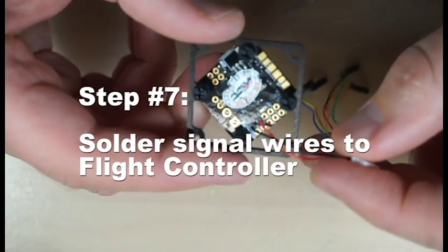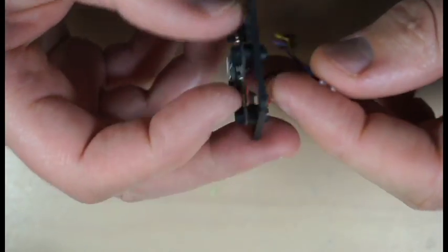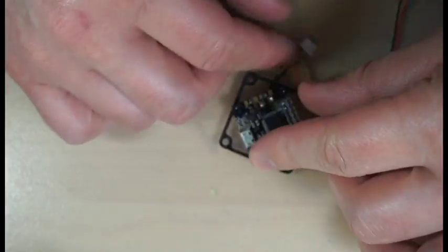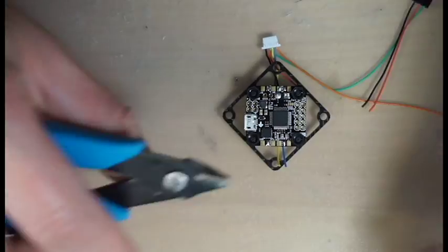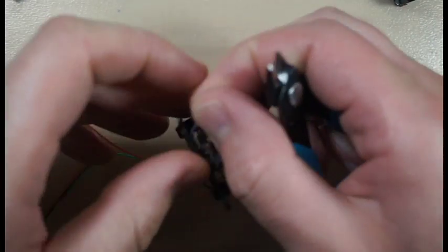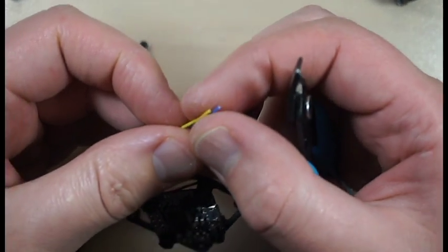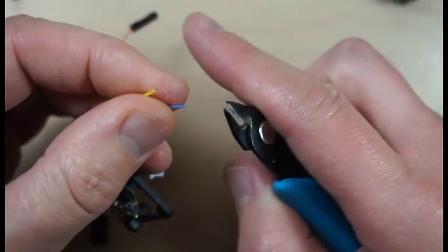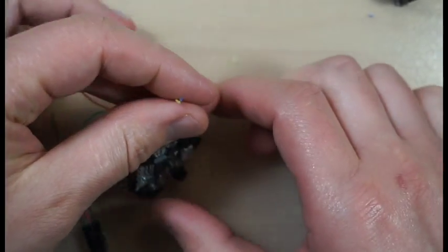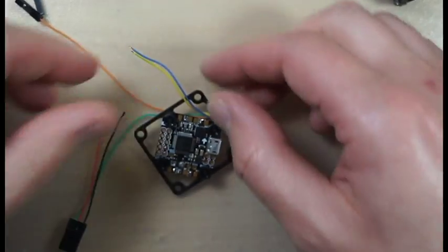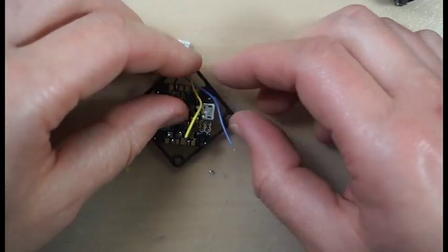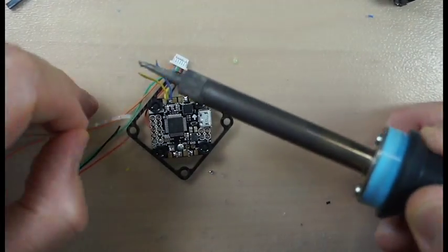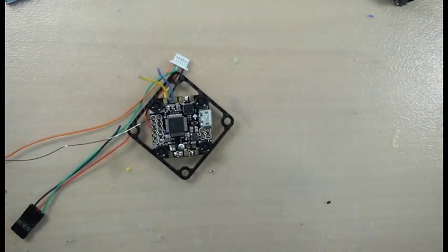Now we are going to solder signal wires to flight controller. Yellow wire will have to be soldered to ESC4 and blue wire to ESC2. We just remove insulation, then tin these wires, tin pads on flight controller and connect them together.